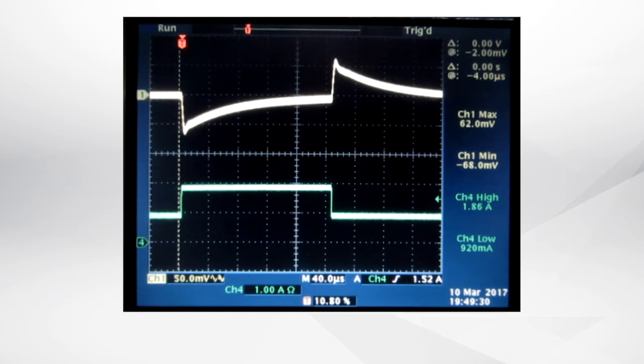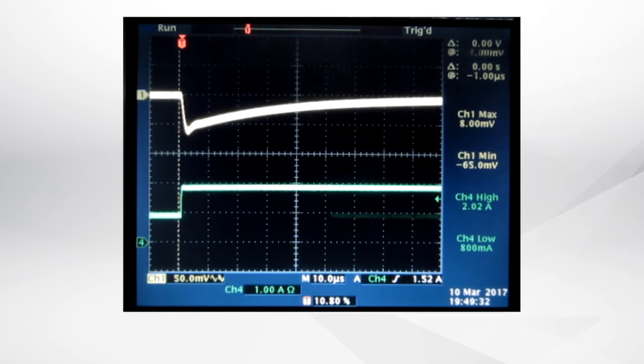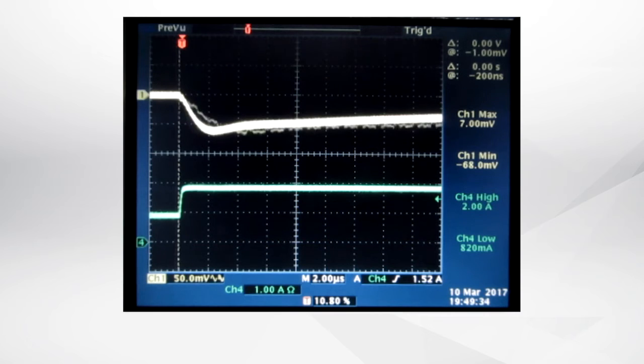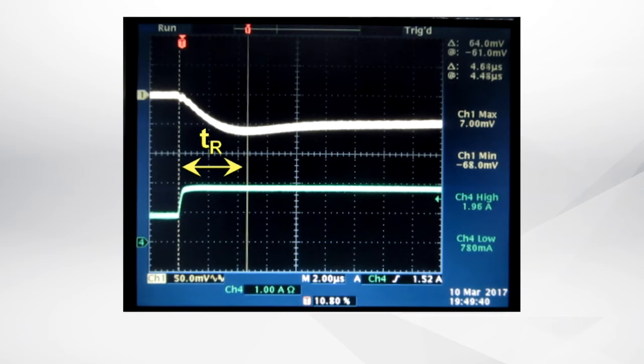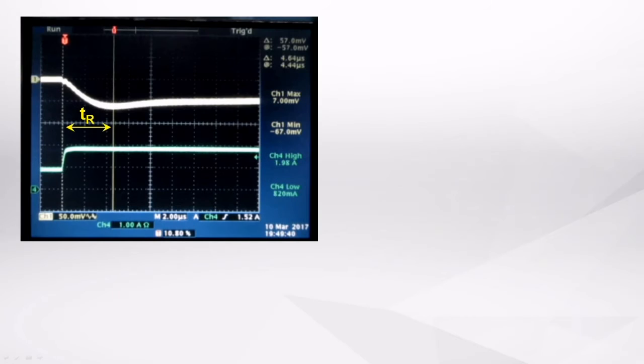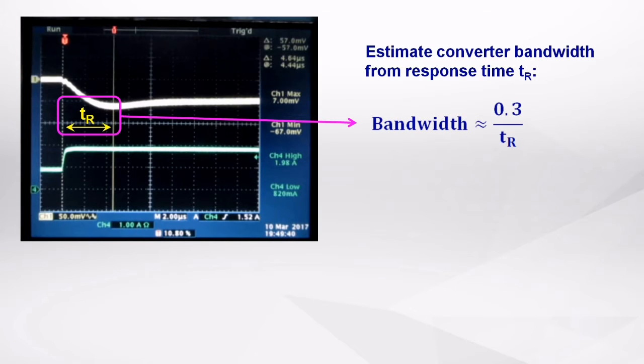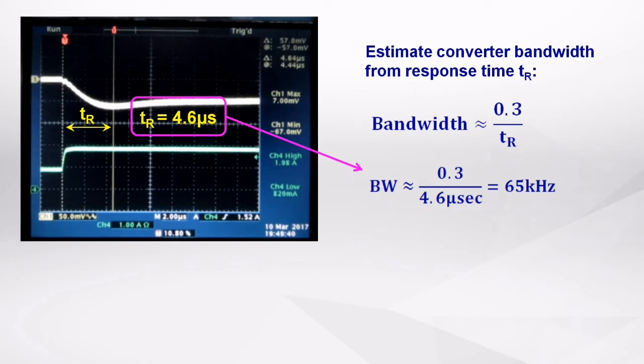But you can learn more from this measurement. By measuring the step load response time of a current mode buck converter, which is the time from step load start to the point where the converter starts to recover, you can estimate the bandwidth or unity gain frequency of the control loop. In this case, I measured around 4.6 microseconds response time, and the bandwidth can be calculated by 0.3 divided by 4.6 microseconds, which gives 65 kHz.